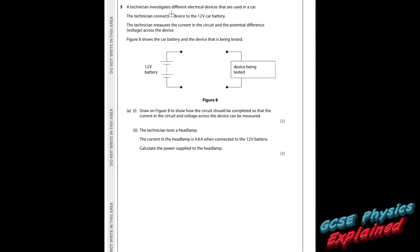Question 5. A technician investigates different electrical devices in a car, connecting each to a 12V car battery and measuring current and potential difference. Part 1: draw on figure 8 to show how the circuit should be completed so that current in the circuit and voltage across the device can be measured. To measure current, pop an ammeter into the circuit. To measure voltage across the device, connect a voltmeter across it. Then connect the loop to complete the circuit.